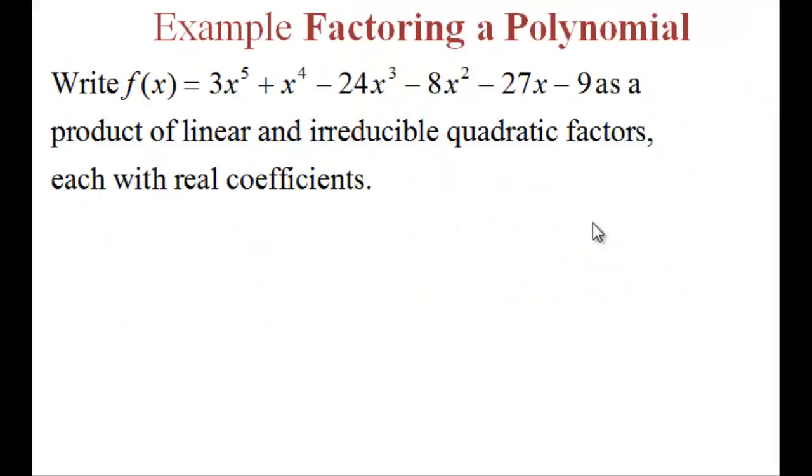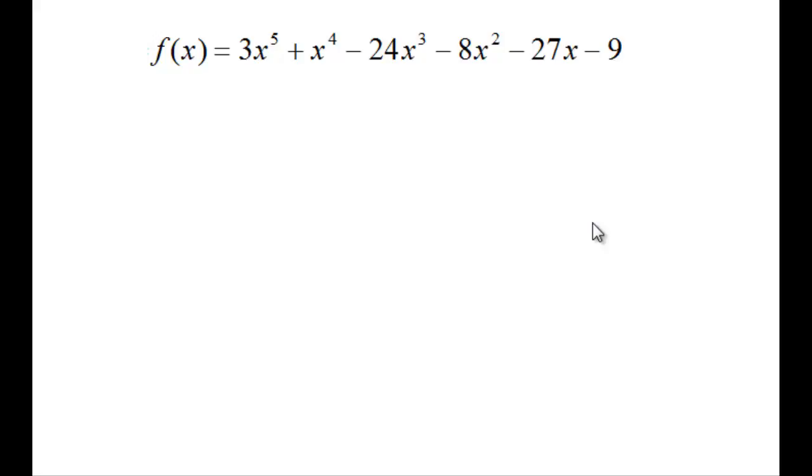Let's use all this information to factor a polynomial. We're going to write f(x) equals 3x to the fifth plus x to the fourth minus 24x to the third minus 8x squared minus 27x minus 9 as a product of linear and irreducible quadratic factors, each with real coefficients. Step 1 is to identify all of the potential zeros.